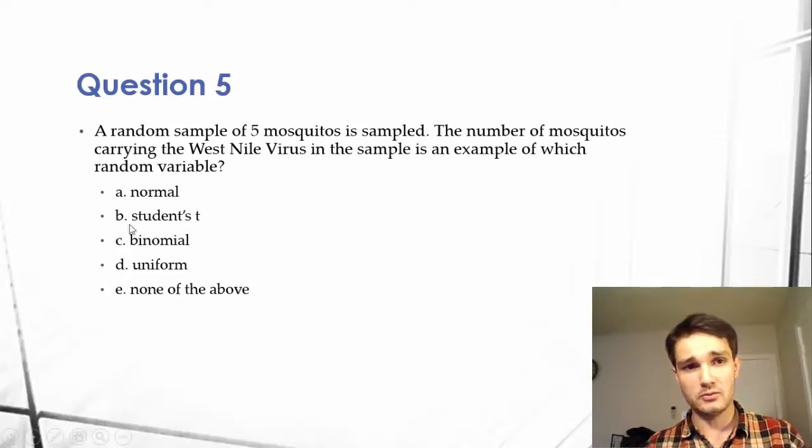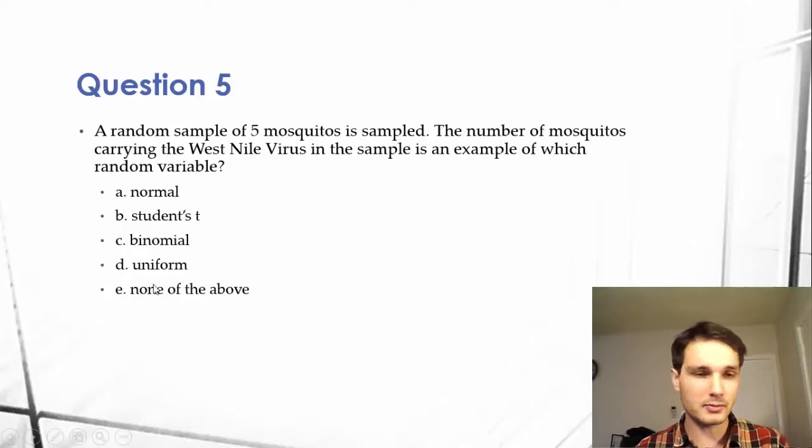So, A, normal. I believe we're talking about distributions here. So normal distributions, T distributions, binomial distributions, uniform distributions, or none of the above.